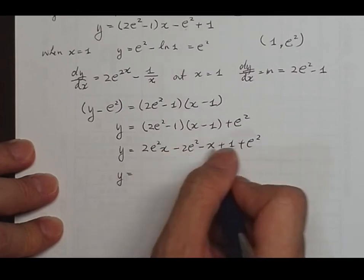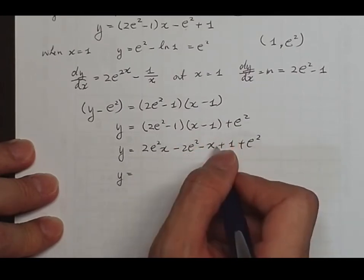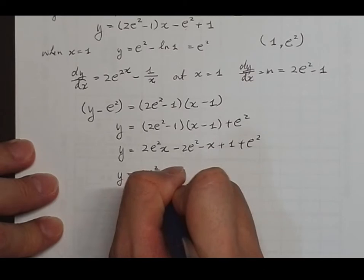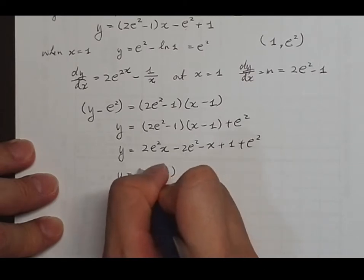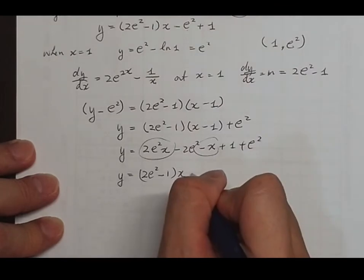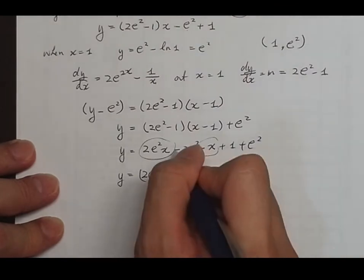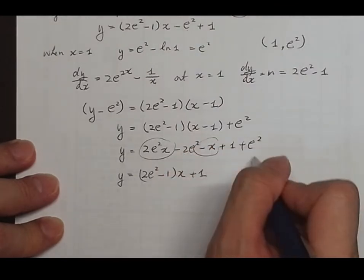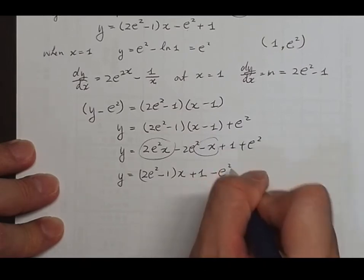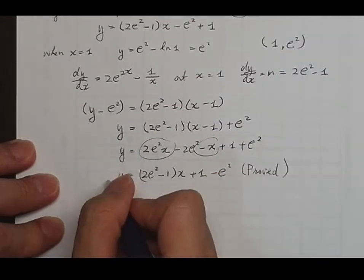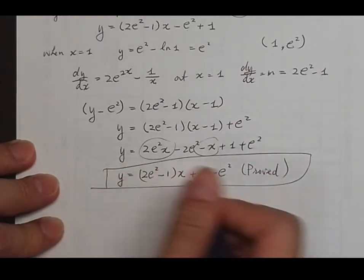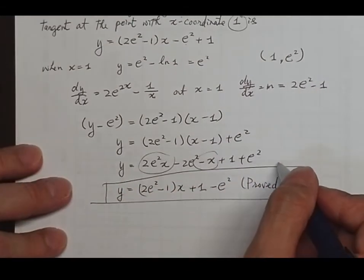Expanding: y equals 2e²·x minus 2e² minus x plus 1 plus e². Taking common factors of x: y equals (2e² minus 1)x, and the constant terms give minus e² plus 1, so we proved the tangent equation y equals (2e² minus 1)x minus e² plus 1.